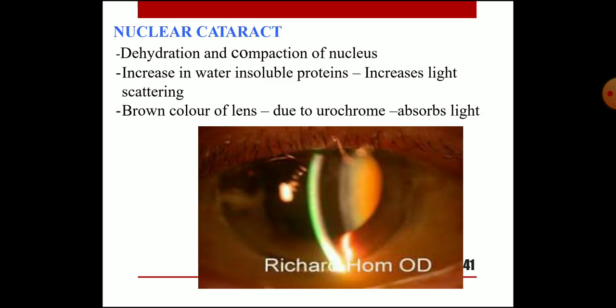Nuclear cataract involves dehydration and compaction of the lens nucleus, with an increase in water-insoluble proteins that increases light scattering. The brown color of the nuclear cataract lens is due to urochrome, which absorbs light.